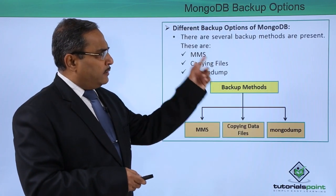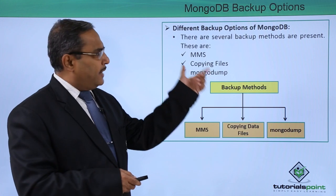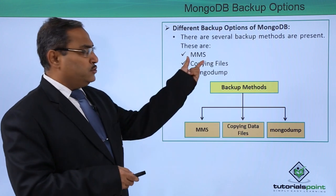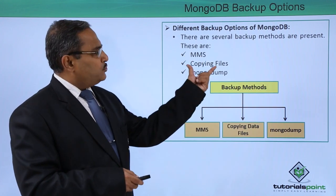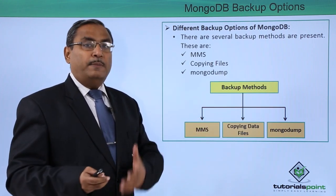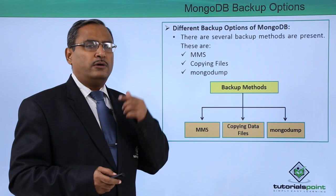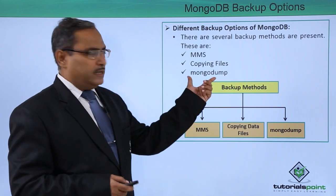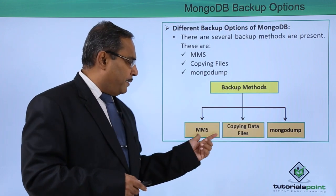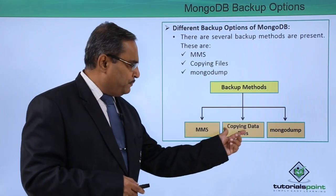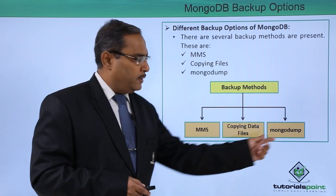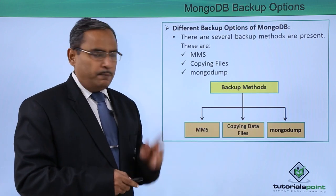There are several backup methods present. These are: MMS, that is MongoDB Management Service, which is one automated service. Next one is copying files — in this case we will be doing a copy of our files, but proper journaling will be required for restoring them. And another very famous option is MongoDump. So the backup methods we have are MMS, copying data files, and MongoDump. We shall be discussing all of them one by one.